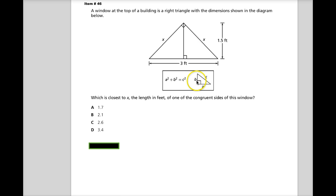So they give you this diagram and then they give you this box, which is closest to x, the length in feet of one of the congruent sides of this window. If they give you a gigantic box with the Pythagorean theorem and the part of the drawing that shows what sides of the Pythagorean theorem to use, they're giving you a very clear hint about where they want you to go with this question.